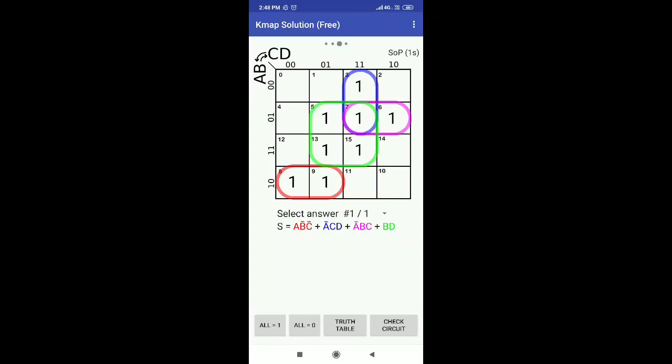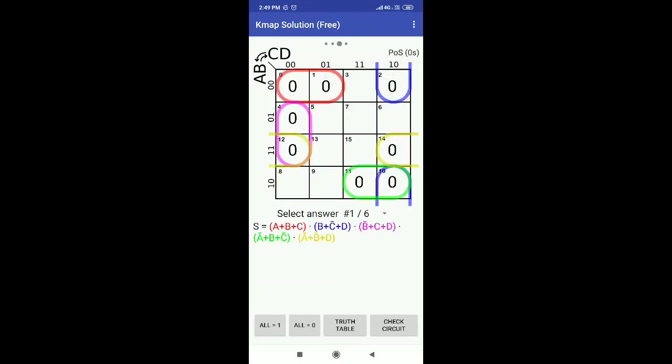If you want to reduce it into the POS, on top of the screen you can see SOP in brackets. Click on that and you'll get another option called product of sums zeros. If you click on that, you'll get POS K-map there and the POS expression reduced for these values.